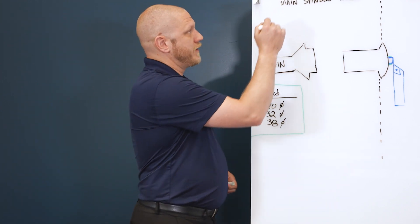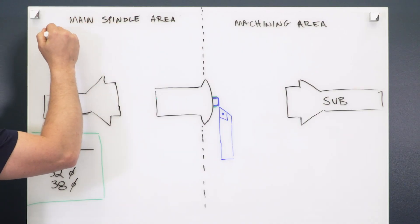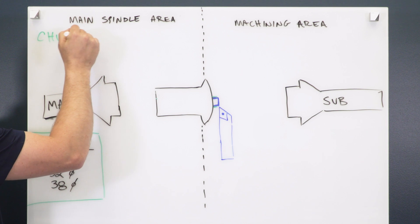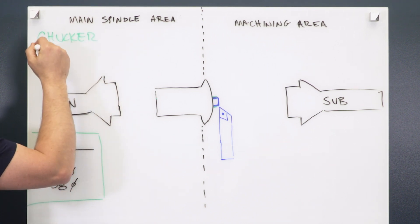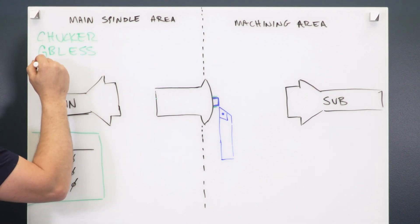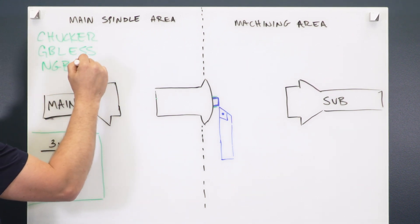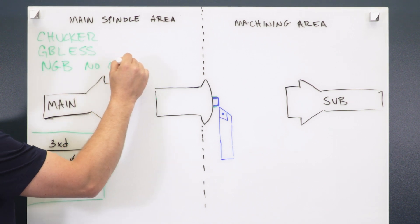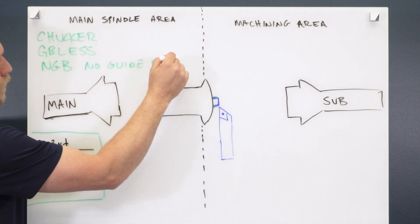You have what we call chukar mode, and then there's also guide bushing-less or GB-less, and there's also NGB which would be no guide bushing. So what does that mean?